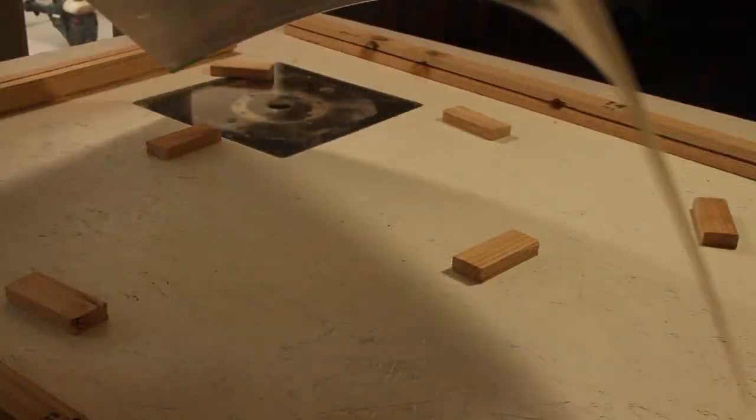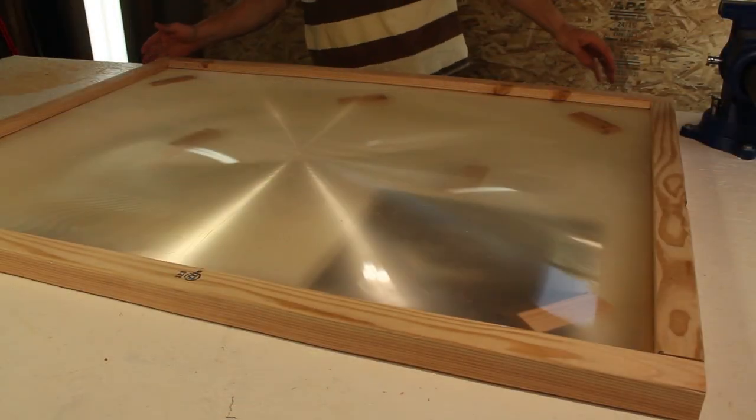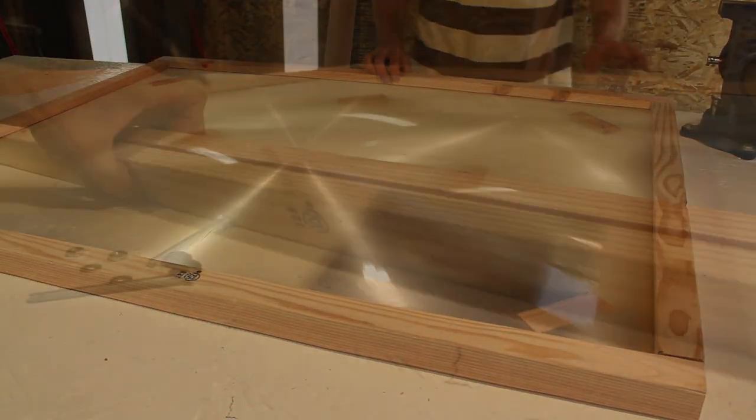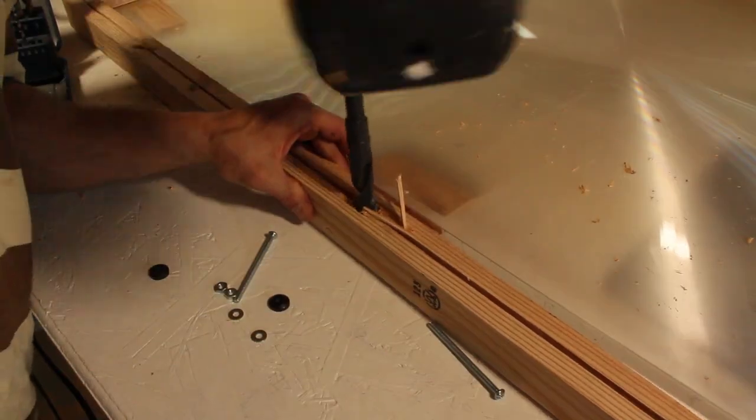This is the groove that our lens will fit into, and sliding the pieces together into place proves that the cuts were good. The edges match up and the frame looks functional, but before we secure it, we'll need to drill some holes right in the center to accommodate this 3-inch bolt.